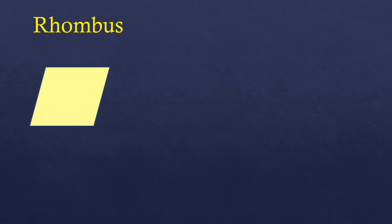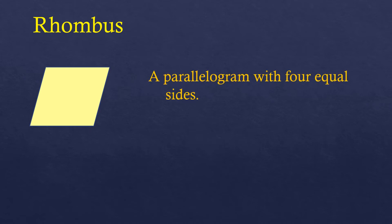Another quadrilateral is the rhombus. Sometimes it's called a diamond, because if you rotate it to make it stand, it looks like a diamond. But technically, in geometry, we call it rhombus. A rhombus is a parallelogram, so all the properties of a parallelogram are in a rhombus, except that it has four equal sides. So it's a parallelogram with four equal sides.